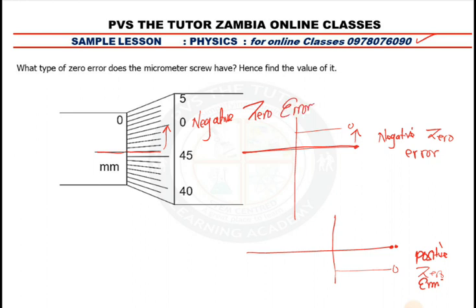That's a negative zero error. Now, what is the value of it? We are going to count backwards from where it is: backwards one, two, three, four. We said it's negative, so any value we get from the thimble we always multiply by 0.01. That would be negative four, counted backwards, multiplied by 0.01 — so the negative zero error is negative 0.04.